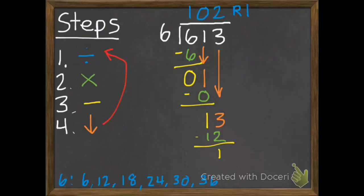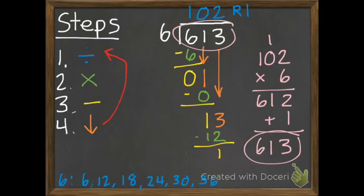I know that I can have a remainder of 1 because it's less than 6. Let's check our work. 102, which was our answer, times 6. 2 times 6 is 12. 6 times 0 is 0, plus 1 is 1. 6 times 1 is 6. We need to add in our 1 remainder. So we're going to get 613, which is perfect.